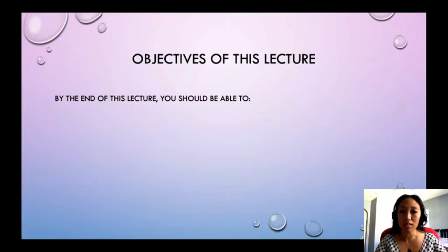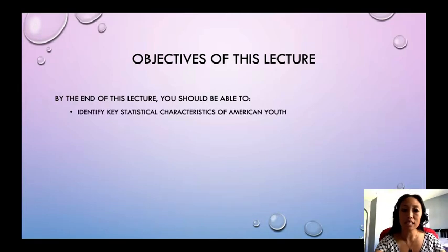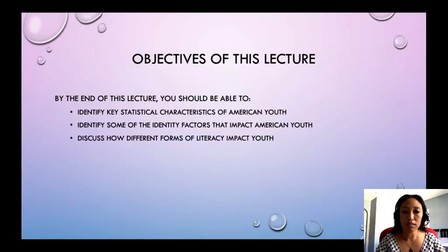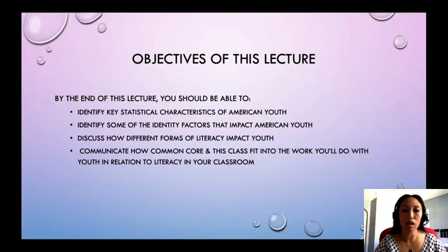The objectives of this lecture are for you to be able to, by the end of the lecture: identify key statistical characteristics of American youth, identify some of the identity factors that impact American youth, discuss how different forms of literacy impact youth, and communicate how Common Core and this class fit into the work you'll do with youth in relation to literacy in your classroom.